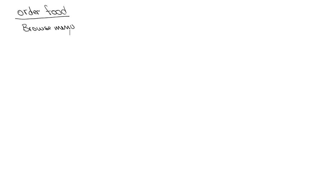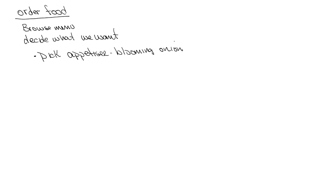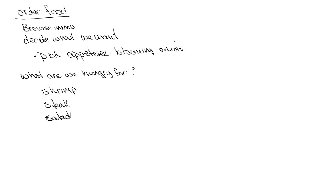The very first thing we would need to do is browse the menu. Then we need to decide what we want. Part of deciding is picking an appetizer — let's say we want a blooming onion. Remember, the appetizer comes with the dinner. The next thing to decide is what we're hungry for as a main course — maybe a steak, some shrimp, or something healthy like a cobb salad. After deciding on the main course, we have to decide on the sides, and if we're having shrimp, maybe soup and salad.